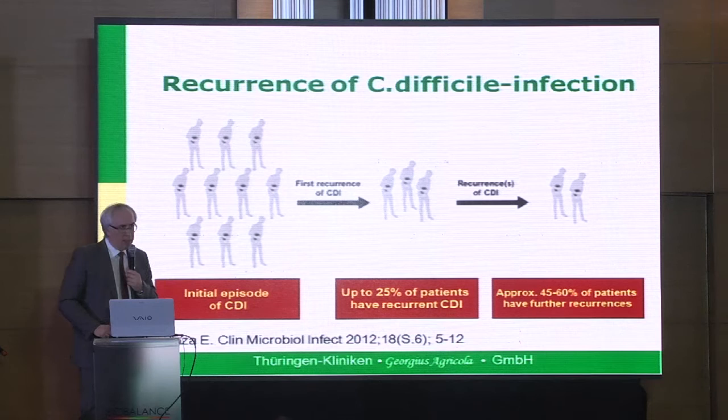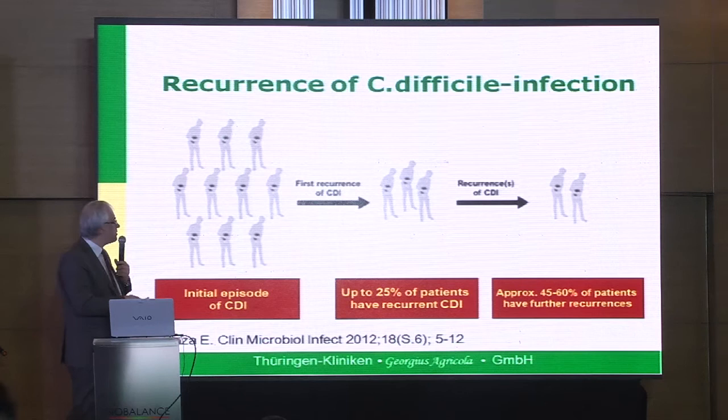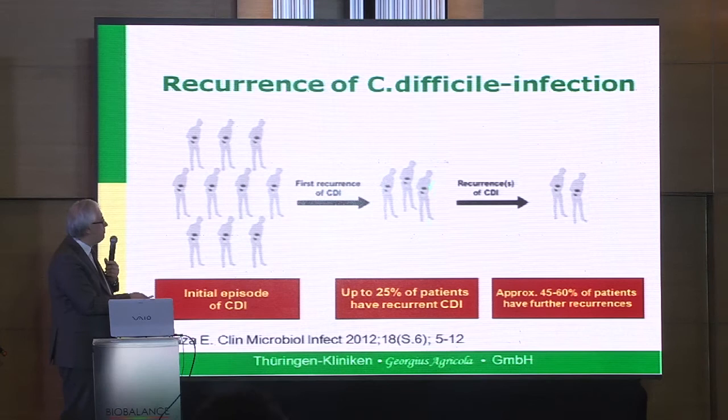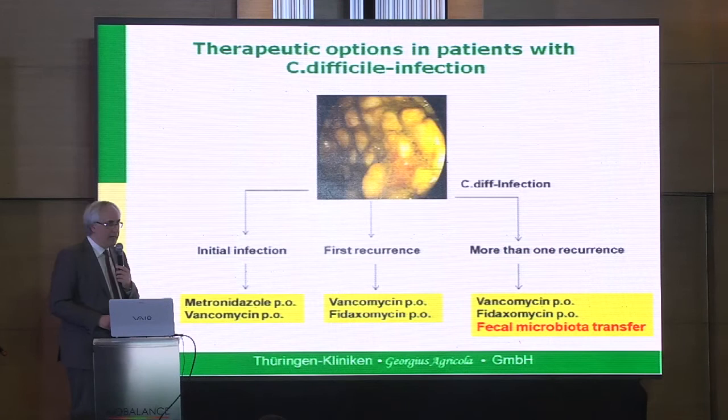The problem with Clostridium difficile is that if the patient gets this disease, after the first initial episode they may develop recurrence. About 25% — one-fourth of patients — develop recurrence after the initial episode of CDI. After the first episode, the risk of further recurrences is growing — approximately 45% to 60% of patients have further recurrences.